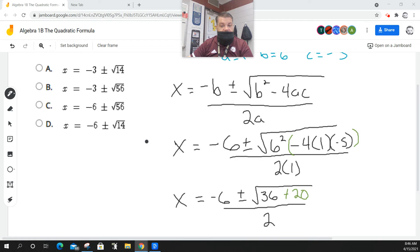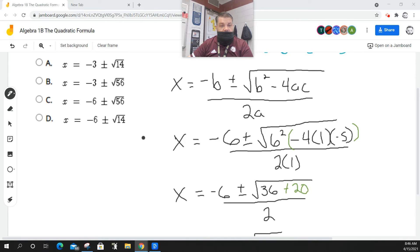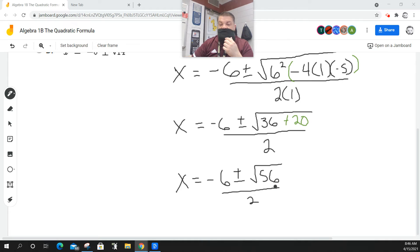But we got to be careful. Like, it might be this one. But I don't think 56 is reduced. So, can I reduce 56?